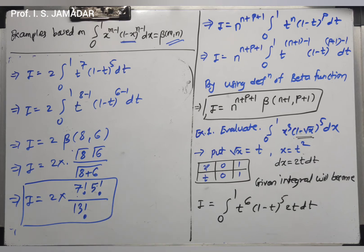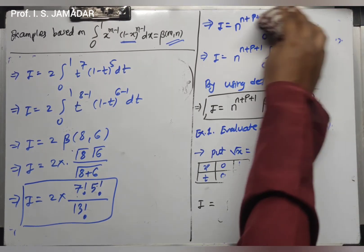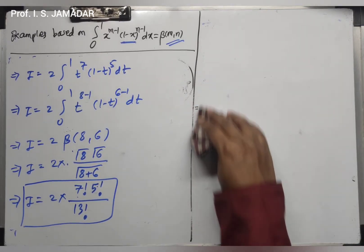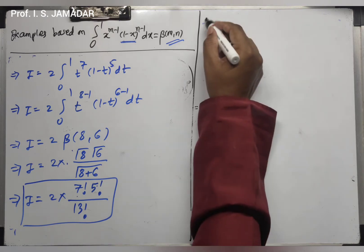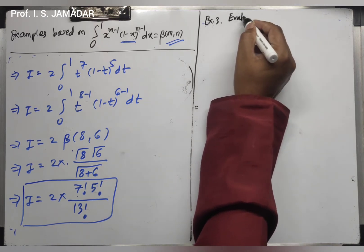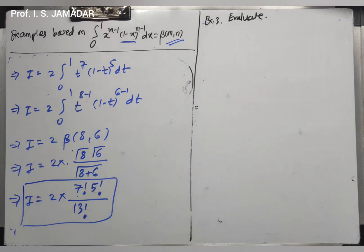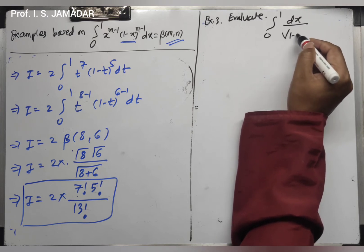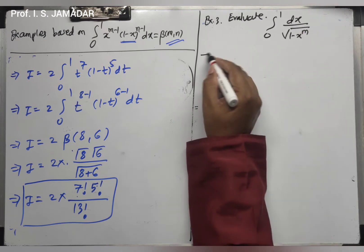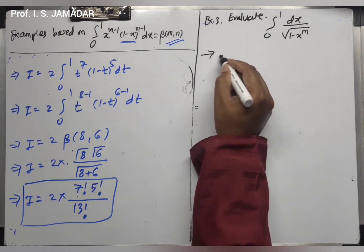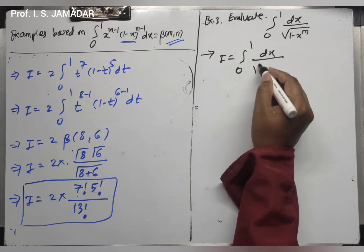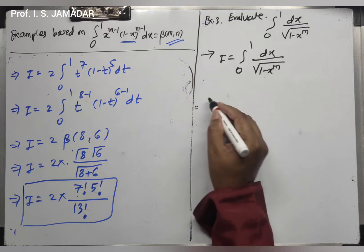Example number 3: Evaluate the integration from 0 to 1 of dx divided by the square root of (1-x)^m. Let us call this integral I. So I equals integration from 0 to 1 of dx upon the square root of (1-x)^m, which can be written as (1-x)^m raised to the power 1/2, meaning [(1-x)^m]^(1/2).